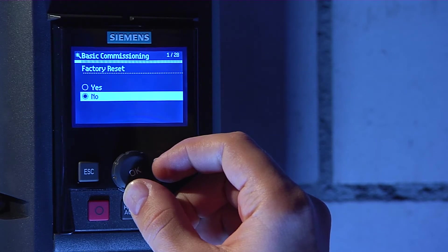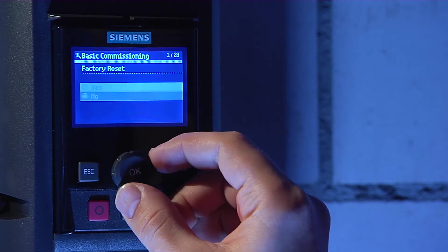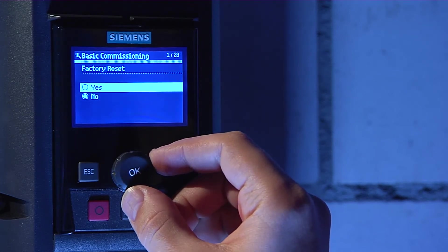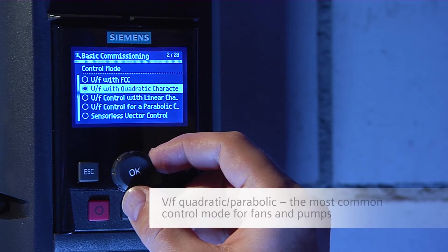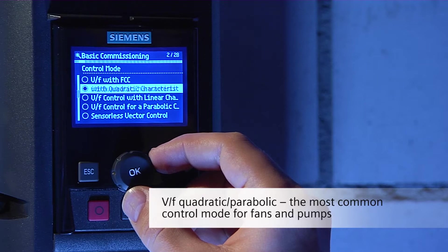Select the factory reset option to make sure that you start with a predefined state. In the next step, select the control mode. V2F with Parabolic Characteristic, the most common HVAC control method, is already preselected.